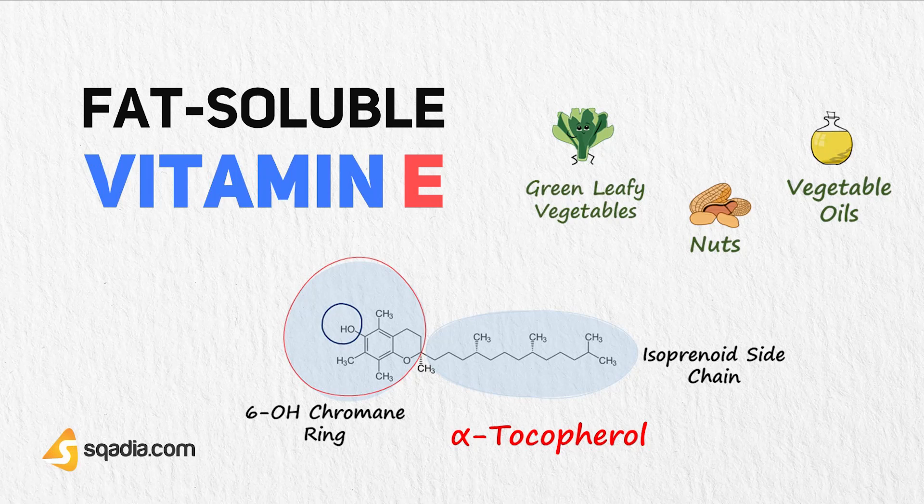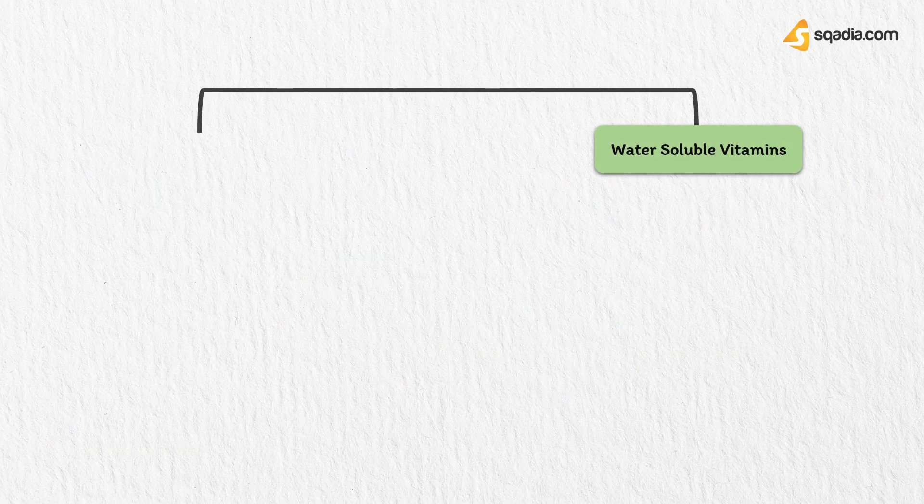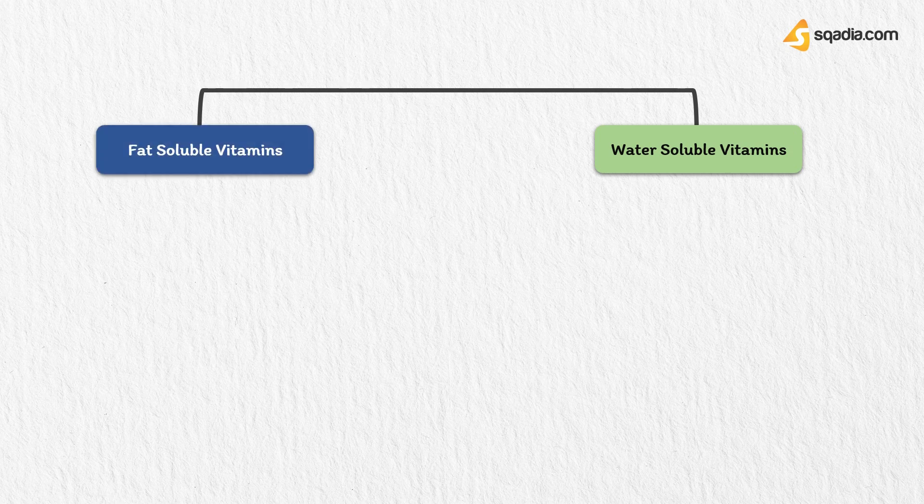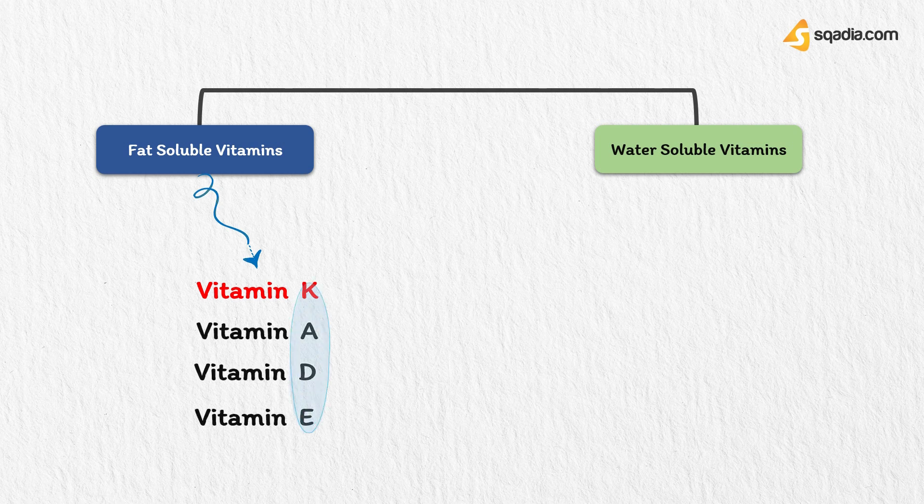There are two types of vitamins: water-soluble vitamins and fat-soluble vitamins. Fat-soluble vitamins include vitamin K, vitamin A, vitamin D, and vitamin E. You can remember fat-soluble vitamins as KADE. Let's discuss vitamin E in detail.